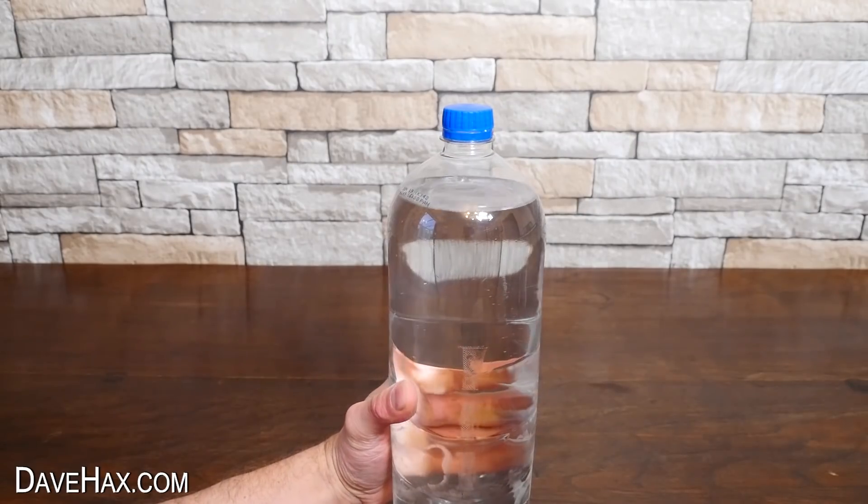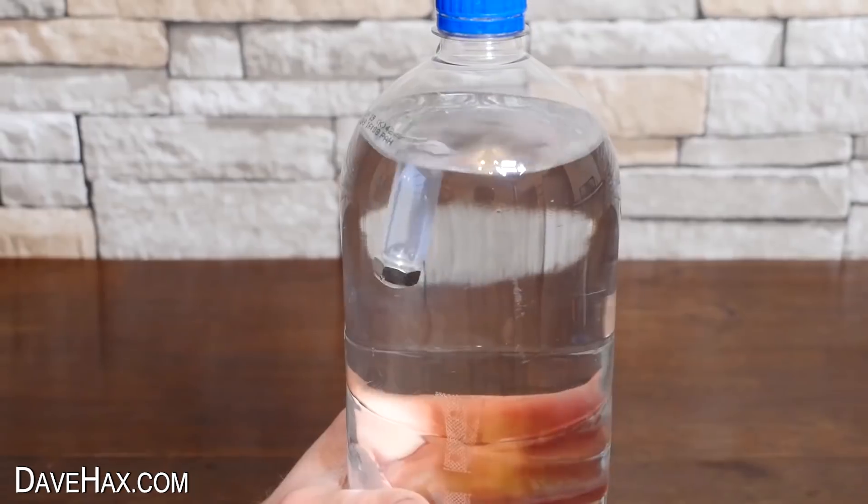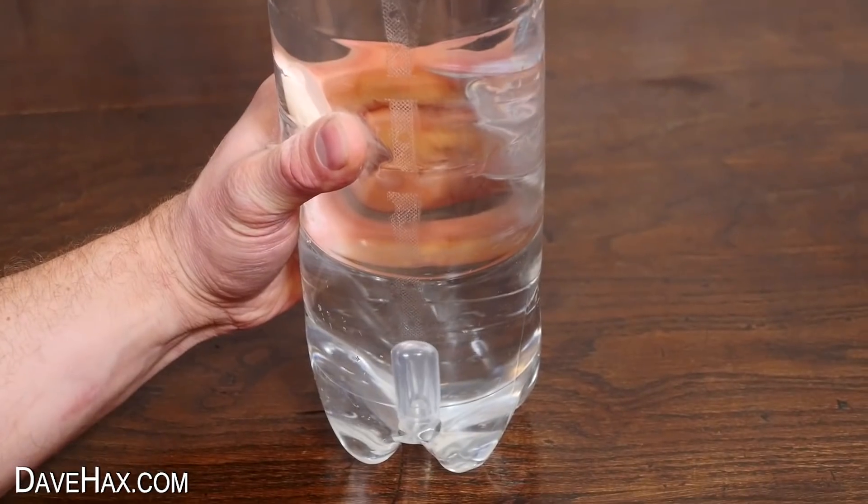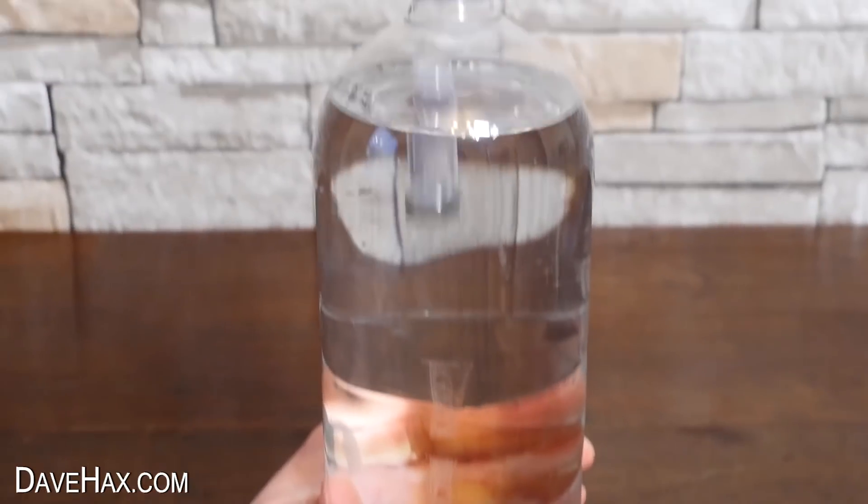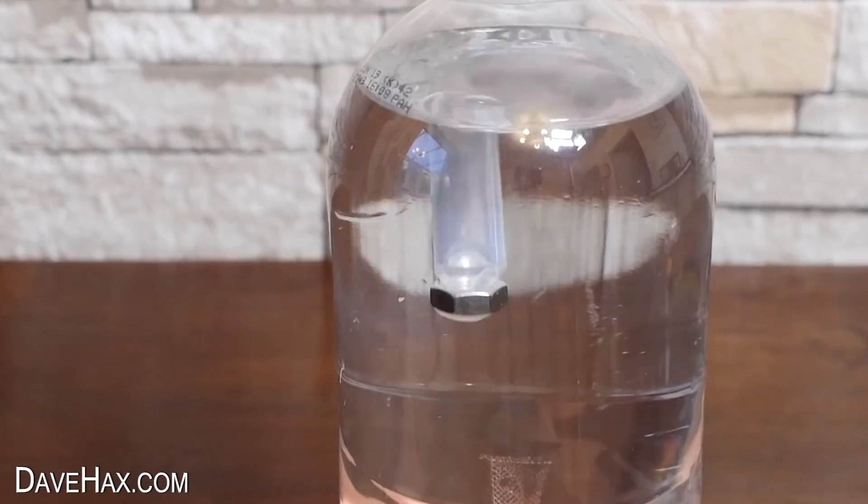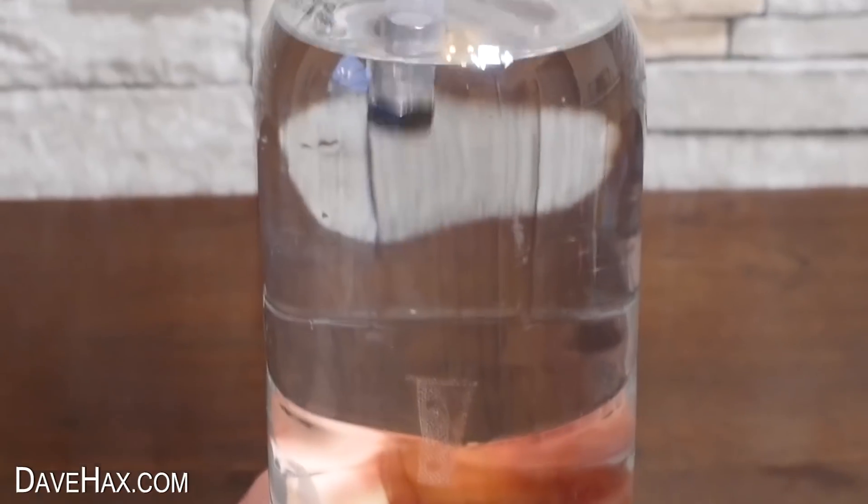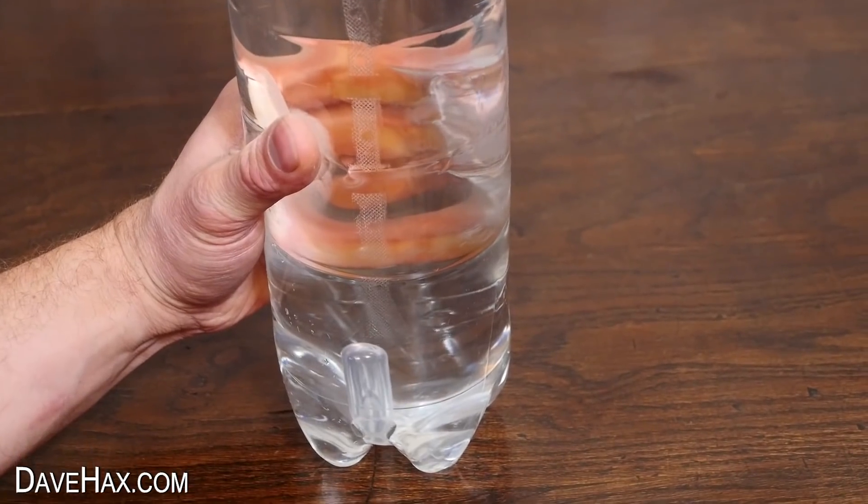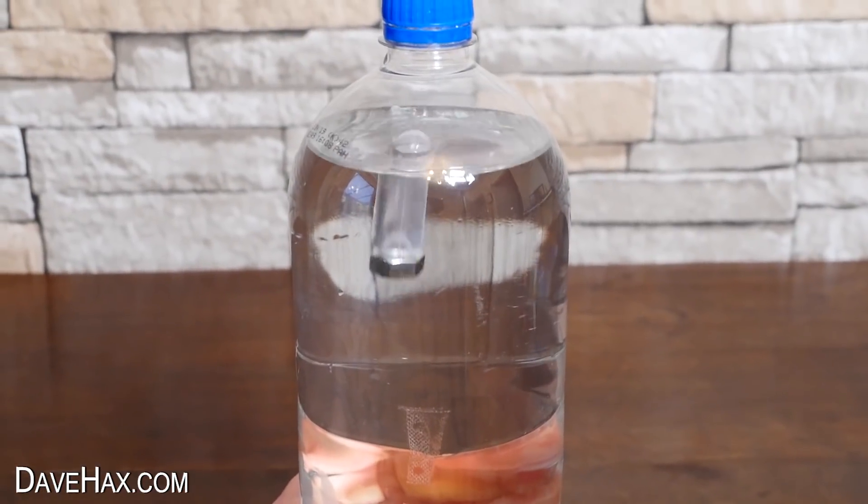So, what's happening here? Inside the pipette bulb is a bubble of air, and when you squeeze the sides of the bottle, you increase the pressure inside. This compresses the air inside the pipette bulb, and this makes it increase in density, and the increase in the air density, combined with the density of the bulb and the metal nut, is now greater than the density of the water around it, so it sinks to the bottom.